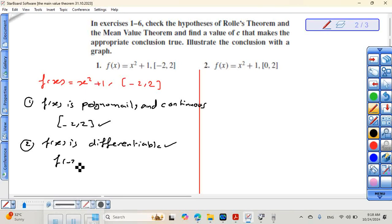f of negative 2 equals x squared plus 1. Replace each x by negative 2. Negative 2 squared plus 1. You should put negative 2 in brackets.